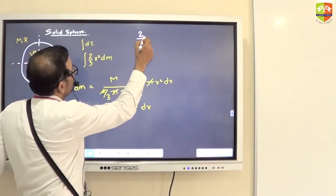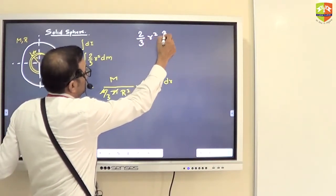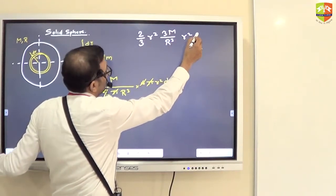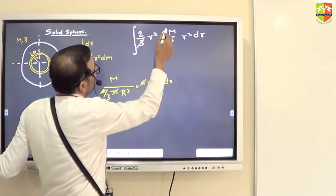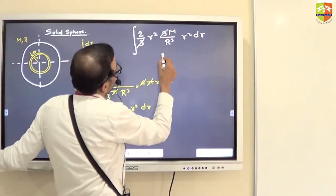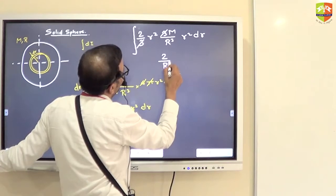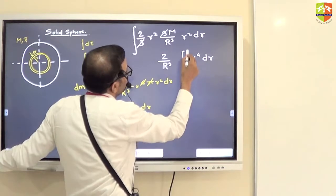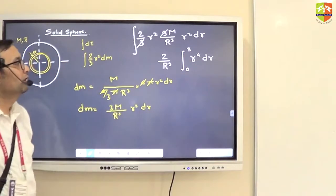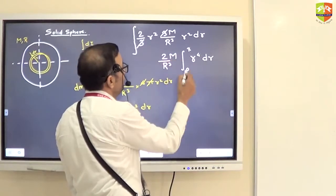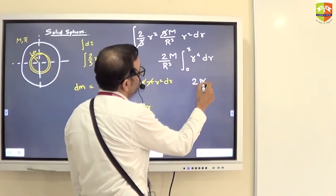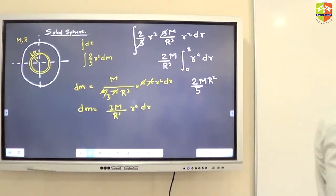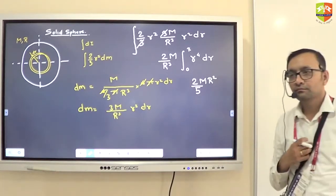So here you can substitute. 0 to capital R. What is r to the power 4? r to the power 5 by 5. So you will get 2 by 5 m R squared.